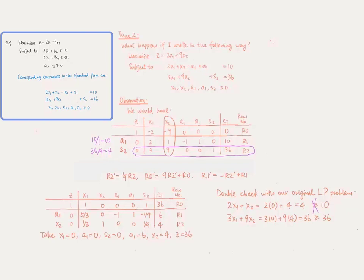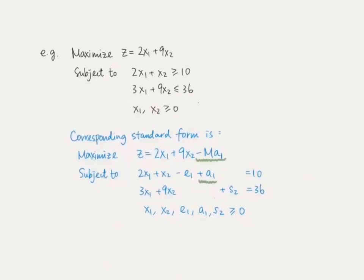Now we come across a problem. We need to have a1 because it gives us a basic variable for the first row, but if the value of a1 is positive it will make the final solution invalid. We wish to keep the artificial variable, but at the same time ensure that when the solution is optimal this artificial variable takes the value zero, so that it won't contribute any positive value to the left-hand side of the constraint with the greater than or equal to symbol. To tackle this problem, we purposely subtract a very large multiple of a1 in the objective function.